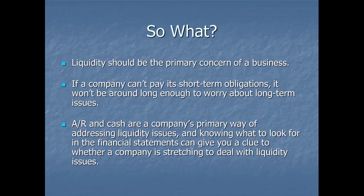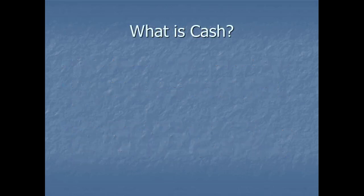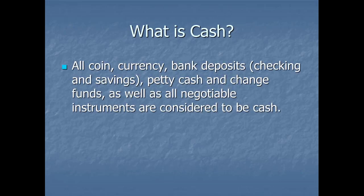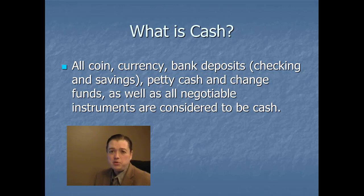Let's start by talking about cash. Cash is really a broad category. It includes all of the coin, the currency, bank deposits — that's checking and savings accounts — petty cash funds, change funds, and any very quickly negotiable instruments. Now, that seems pretty self-explanatory for most people. What's in my checking account and what I've got on hand is cash.